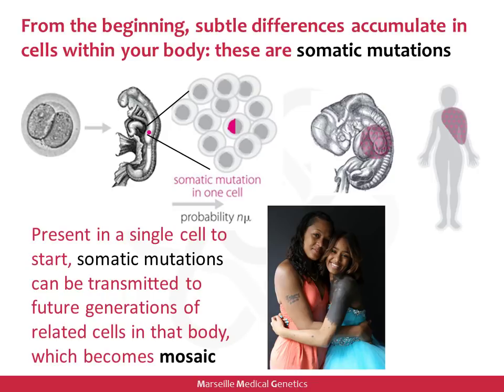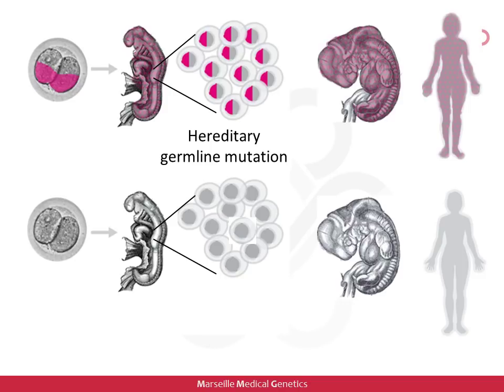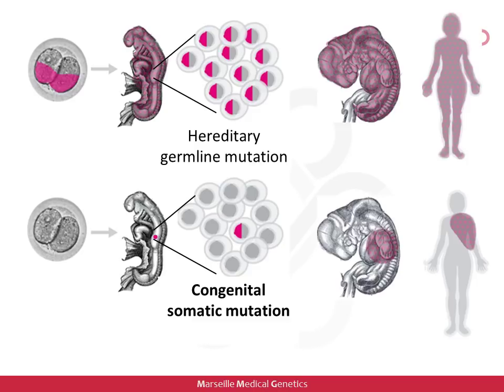A somatic mutation would be present in one single cell and then transmitted to future generations of related cells within that person's body — that is why we call all of us mosaics. This differs from a hereditary germline mutation, where if a mutation is present in the fertilized cell, all cells in the organism will carry it throughout life. In contrast, a congenital somatic mutation gives rise to only part of the body carrying that mutation, and other parts not carrying it.